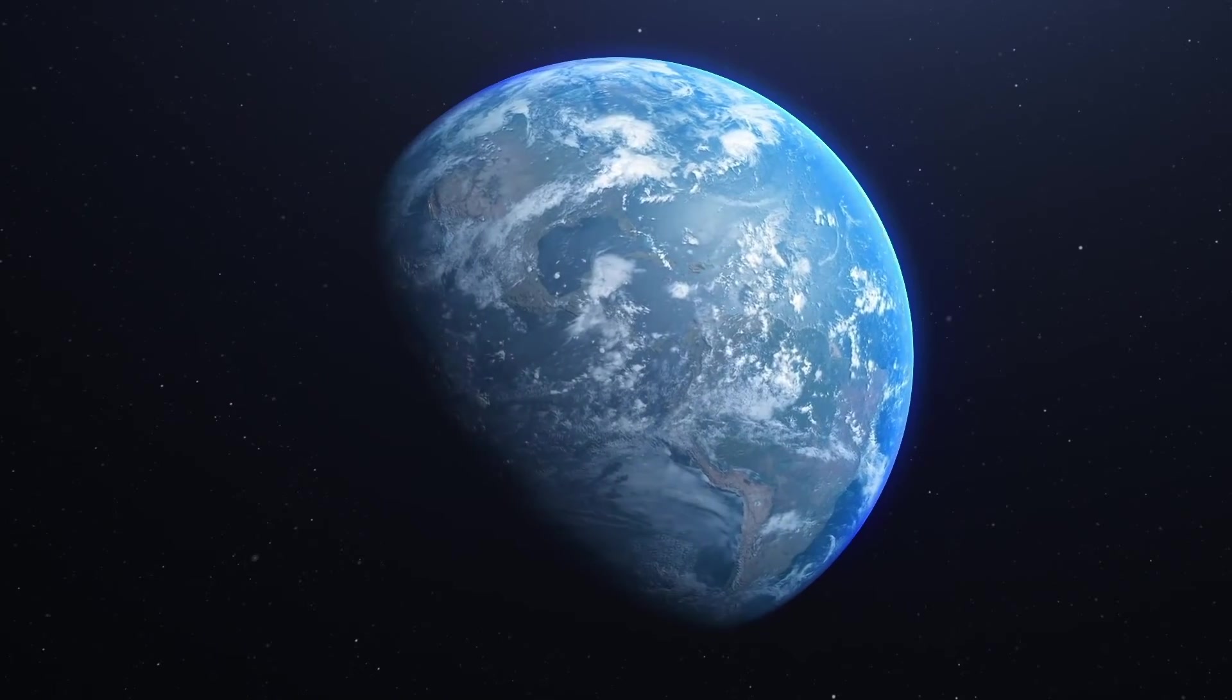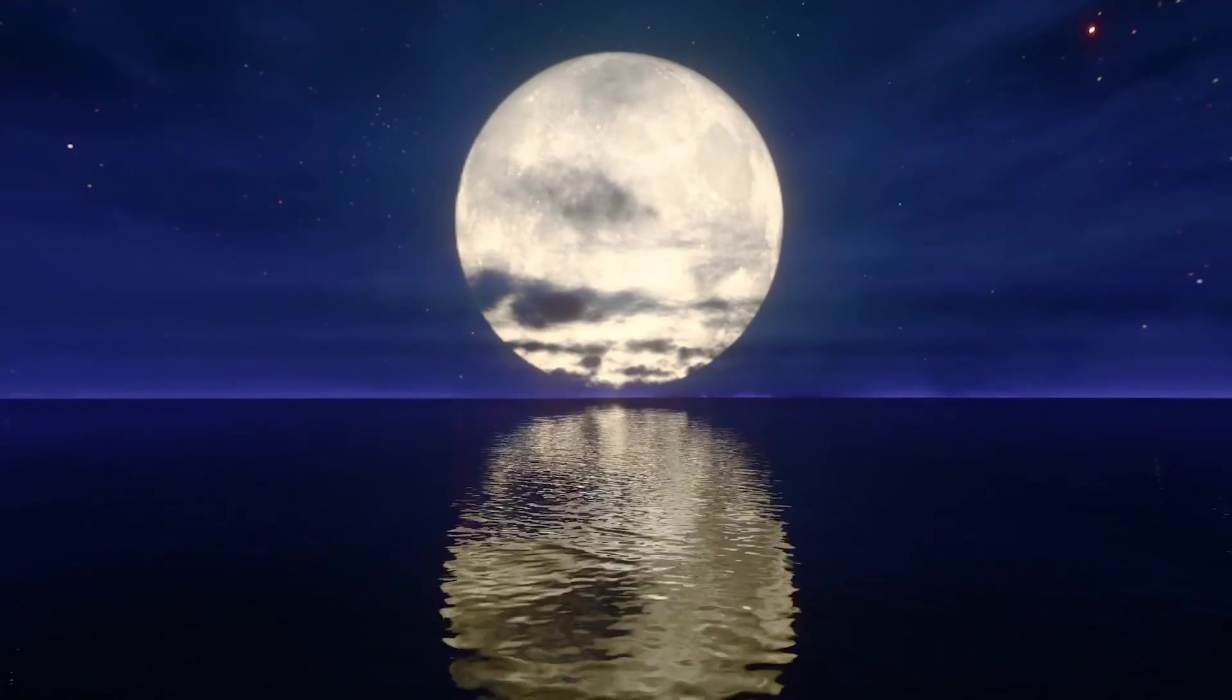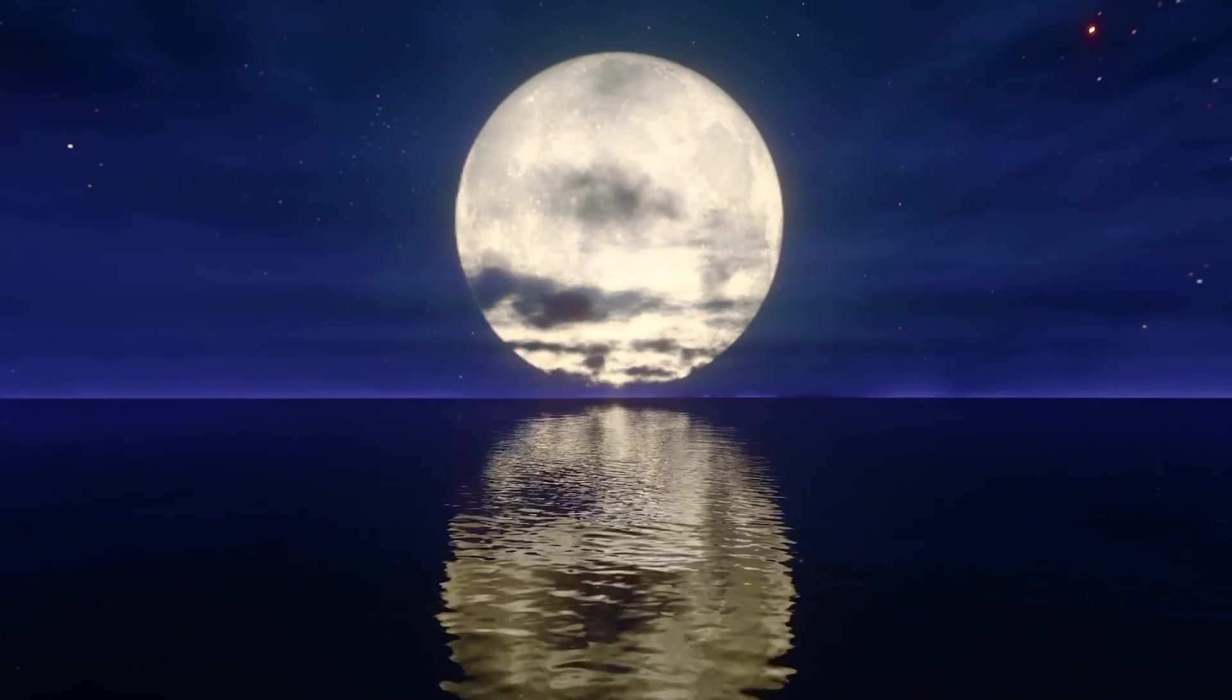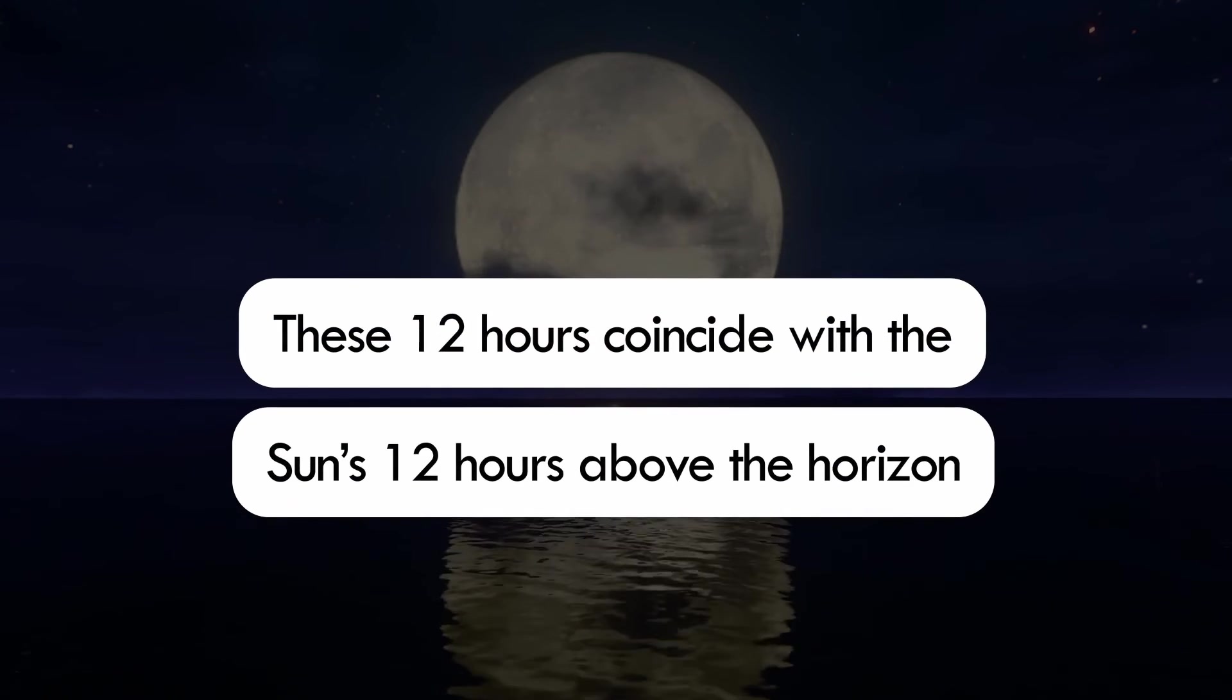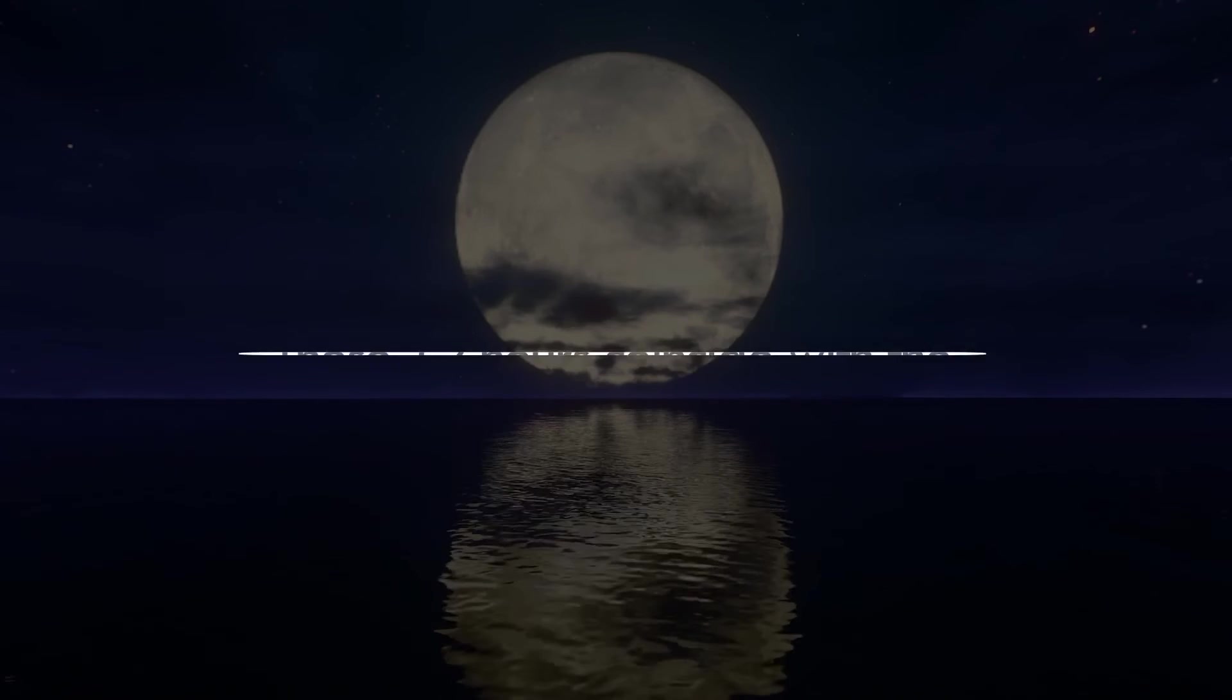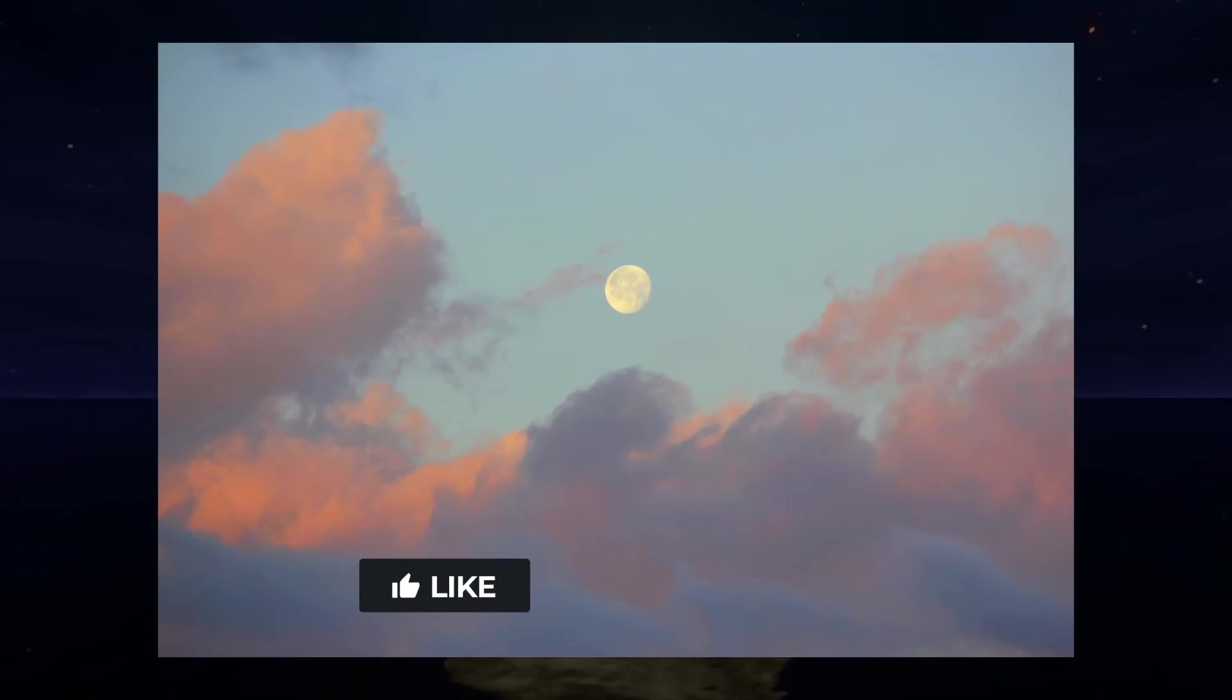Since the Earth is constantly rotating, the Moon appears above the horizon for around 12 hours out of the total 24. On some days, these 12 hours coincide with the Sun's 12 hours above the horizon, at which point we can see the Moon during the daytime.